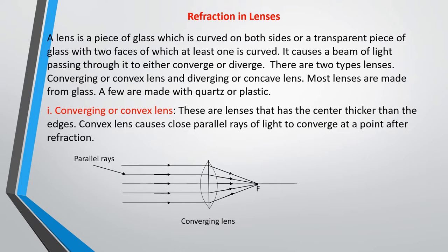We are looking at refraction in lenses. A lens is a piece of glass which is curved on both sides, or a transparent piece of glass with two faces of which at least one face is curved. What a lens does is cause a beam of light passing through it to either converge or diverge. This gives us the two types of lenses: the converging lens and the diverging lens.